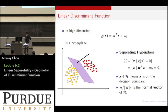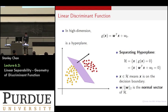If I give you g(x), where g(x) equals w transpose x plus w_0, and I set this equal to 0, then all the x that satisfies this equation will be living on that plane. You can also show that there is a normal vector of this plane, given by w divided by the norm of w.